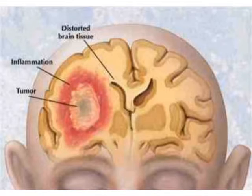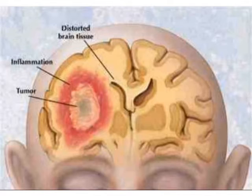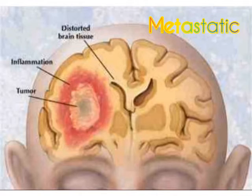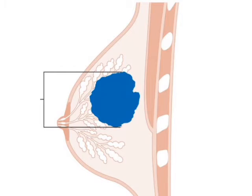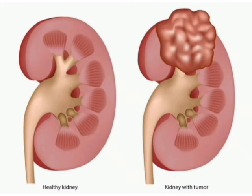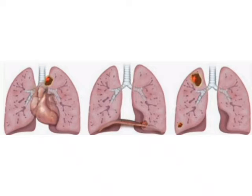To clarify: benign means not cancerous, and malignant means it is indeed cancerous. Now, secondary brain tumors are sometimes referred to as metastatic — either term is acceptable. These tumors normally start as a cancer in another part of the body, which is the primary site — for example, the breast, kidney, or lungs — and then spread to the brain where they form a new tumor.